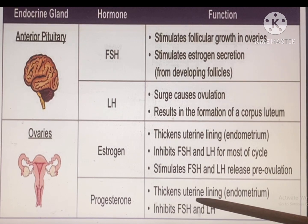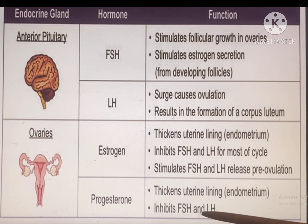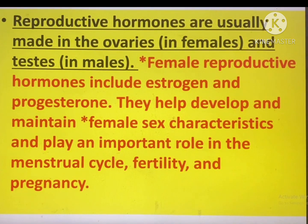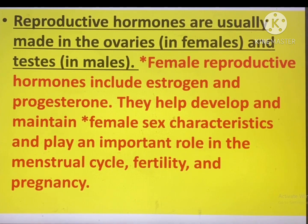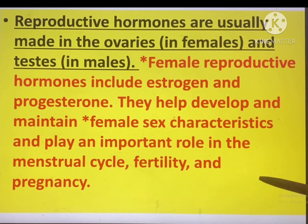Progesterone also thickens the uterine lining or endometrium layer of the uterus and inhibits FSH and LH — meaning they are totally reciprocal to each other. Reproductive hormones are usually made in the ovaries in females and testes in males. Female reproductive hormones include estrogen and progesterone. They help develop and maintain female sex characteristics and play an important role in the menstrual cycle, fertility, and pregnancy.